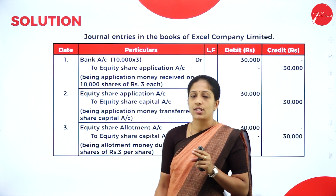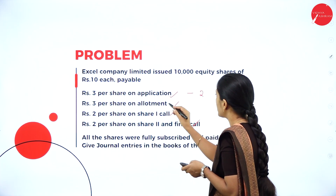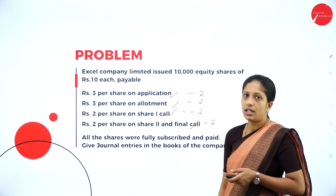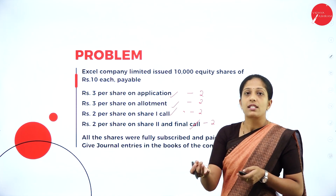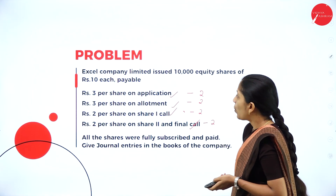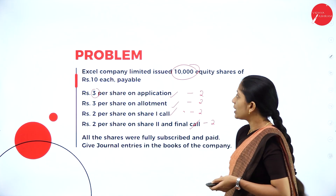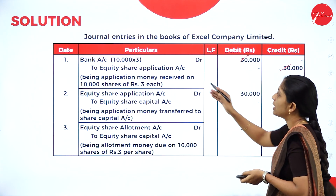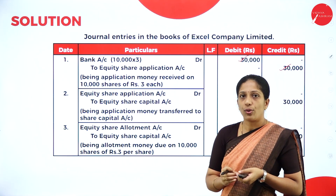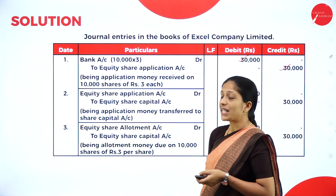Under each stage you record two entries. For the application stage, the first entry is for receiving application money: Bank Account Dr. to Equity Share Application Account — 10,000 × ₹3 = ₹30,000. Narration: application money received on 10,000 shares of ₹3 each. The second entry is transfer of application money: Equity Share Application Account Dr. to Equity Share Capital Account — ₹30,000. Narration: application money transferred to equity share capital account.